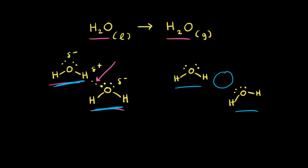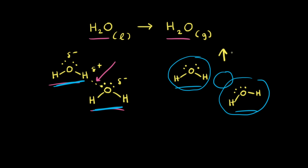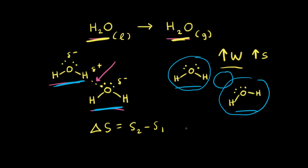We're assuming this is an ideal gas. If there are no intermolecular forces between the gas particles, we've increased the freedom of movement of the water molecules and increased the number of possible positions. Therefore, we've increased the number of microstates available. And if we increase the number of microstates, we increase the entropy. Therefore, thinking about the entropy change — the final entropy S2 minus the initial entropy S1 — since the entropy increased going from liquid water to gaseous water, the change in entropy would be positive.